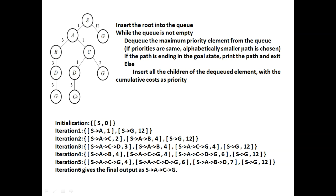Next, S→A→C→D is picked. D has one child, G, so S→A→C→D→G with path cost 6 is inserted. Then S→A→B is expanded — its child D gives S→A→B→D with cost 7. The queue now has S→A→C→G at cost 4, S→A→C→D→G at cost 6, S→A→B→D at cost 7, and S→G at cost 12. We select S→A→C→G and G is the goal, so the algorithm returns the path S→A→C→G.